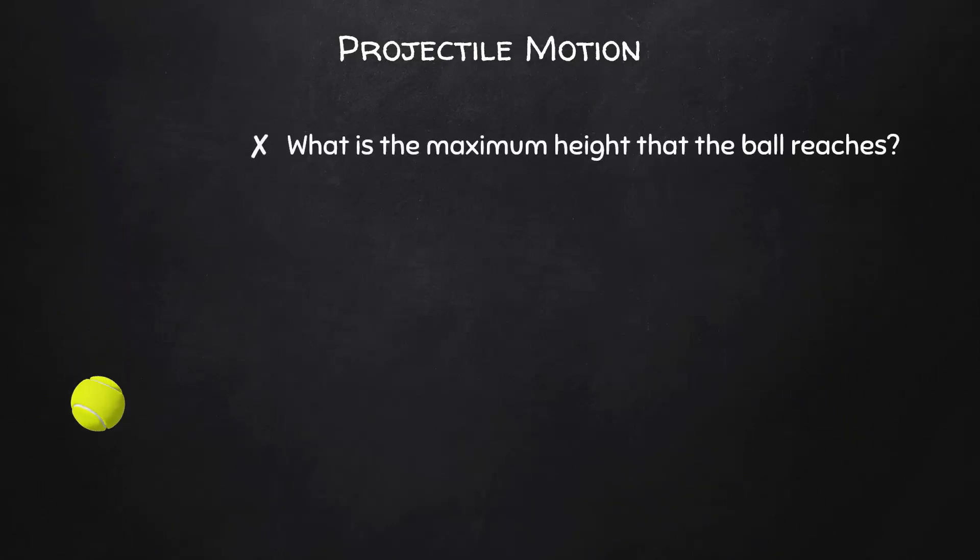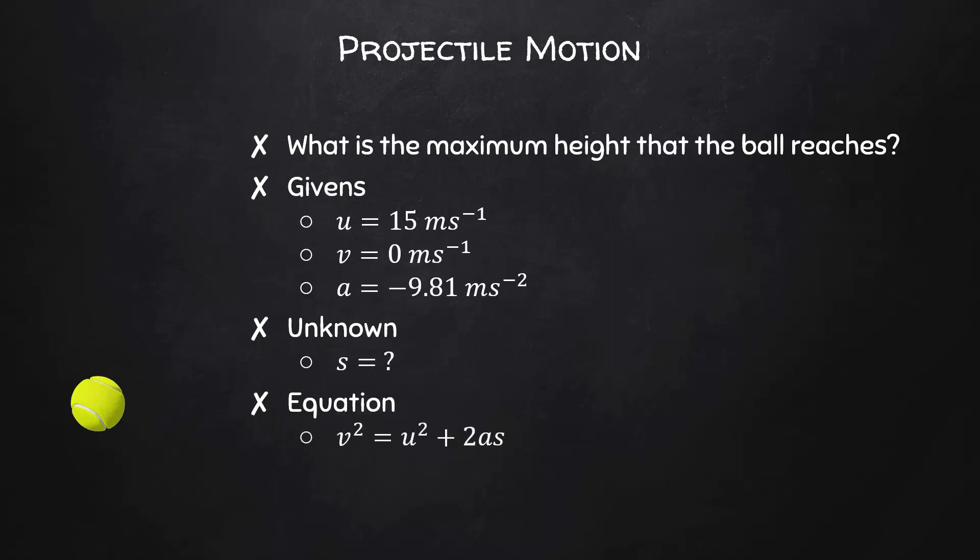Let's find out the maximum height that the ball reaches. We'll start with the givens, as usual. The initial vertical velocity was 15 meters per second. The final velocity, that is, the velocity at the highest point, is 0 meters per second. And of course, the acceleration is negative 9.81 meters per second squared. Our unknown is the displacement. The appropriate equation for these givens and that unknown is v squared equals u squared plus 2as. We can substitute in our given values and find that the maximum height the ball reaches is 11 meters.